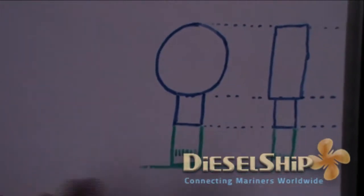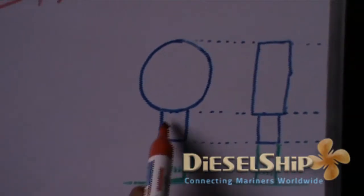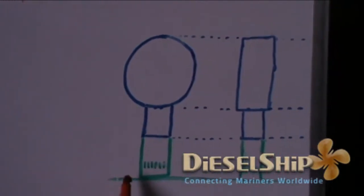So a bladeless fan consists of a tower like this. This is the tower which is in two parts usually.